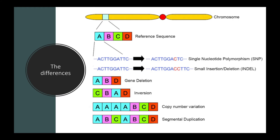Specifically, we're going to be talking about small-scale differences. Small-scale differences are things like SNPs, which are single nucleotide polymorphisms, where you've got a single nucleotide different than the human reference genome, or indels, in which you've inserted or deleted just a few nucleotides.